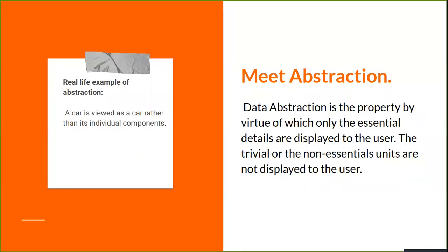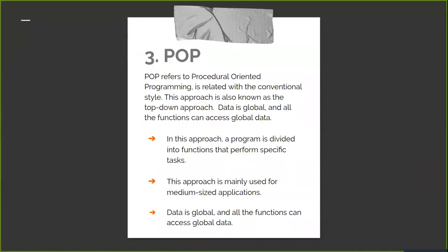Finally, we come to abstraction. Data abstraction is the property by virtue of which only the essential details are displayed to the user — the trivial or non-essential units are not shown. A real-life example: a car is viewed as a car rather than its individual components like the steering, seats, or engine. We consider it as a whole. Data abstraction may also be defined as the process of identifying only the required characteristics of an object, ignoring the irrelevant details.